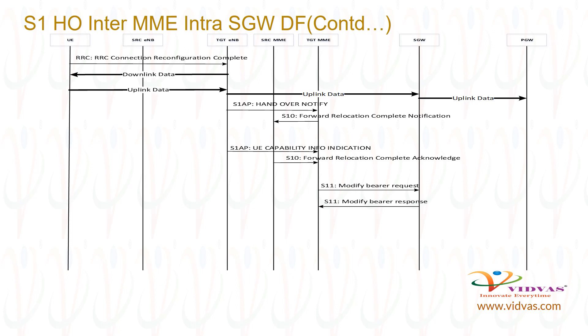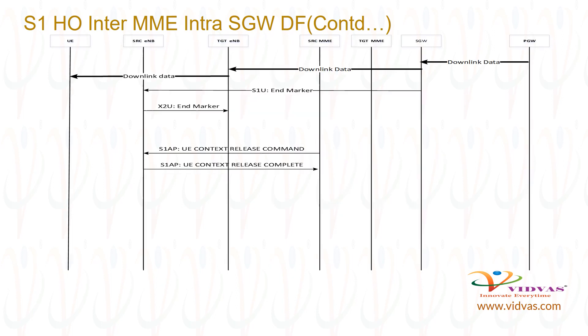Target MME sends S11 modify bearer request to SGW with target ENB FTEID for downlink path. SGW sends S11 modify bearer response to target MME. Beyond this point, any downlink data received at SGW from PGW will be sent to target ENB.